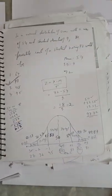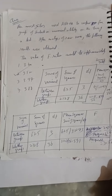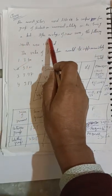Now we move to next question. An investigator used ANOVA to compare four groups of students on numerical ability on the basis of a test. After analysis of raw scores, the following results were obtained.